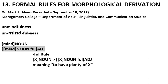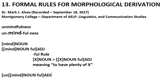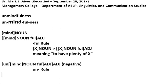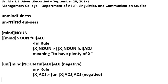Now let's take the adjective 'mindful' and make it negative. We put 'un-' in front of it, and that doesn't change the part of speech — it's still an adjective, but it's negative. Let's make a quick rule: the 'un- rule.' Notice the hyphen after it because it's a prefix. The input is an adjective X, you add 'un-,' and you get a negative adjective. The meaning is 'to not be X.'